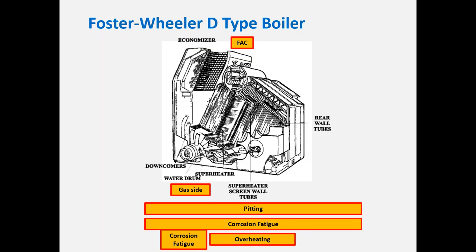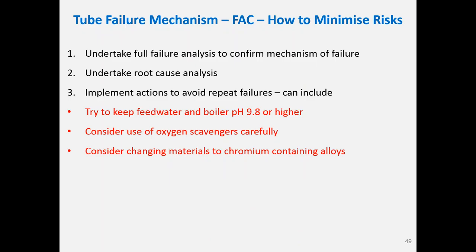To address FAC: do a full failure analysis and root cause, then keep feed water and boiler pH at 9.8 or higher — that drives you down the solubility curve. Consider the use of oxygen scavengers carefully — if you are using oxygen scavengers and having FAC failures, you probably need to reconsider that approach. Sometimes you can't change the chemistry enough, so you replace tubes with a higher chromium content material. Instead of carbon steel, you go to what we call P11 or P22 — one-and-a-quarter or two-and-a-quarter chrome — which armors up the boiler and provides additional protection, and you shouldn't have another failure again after that.